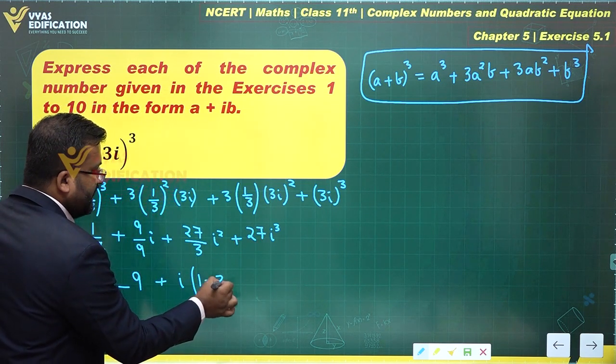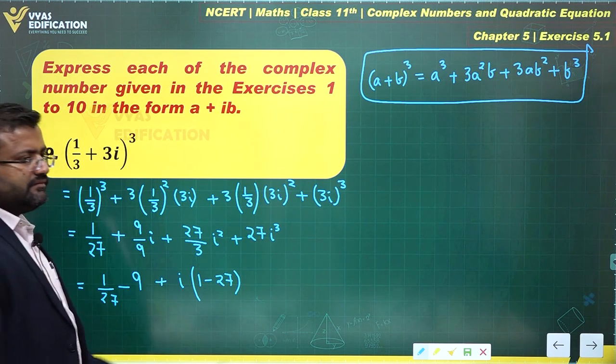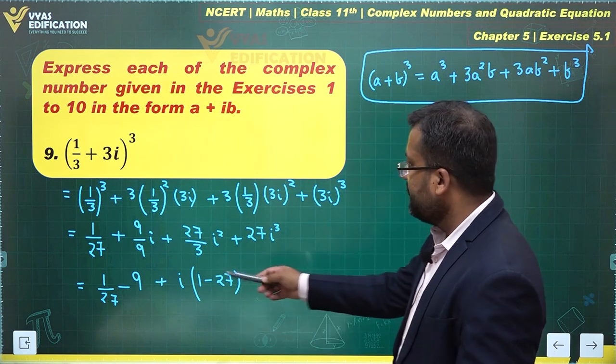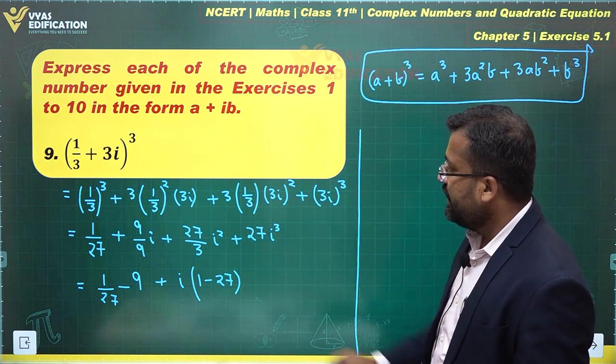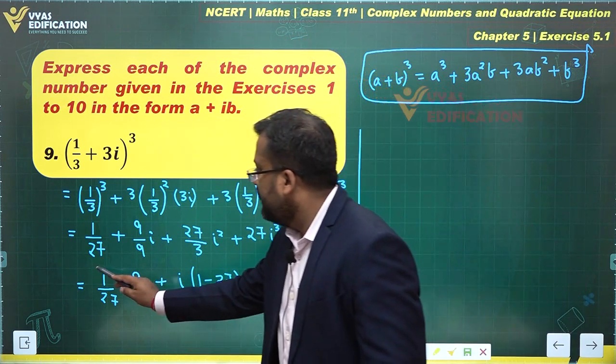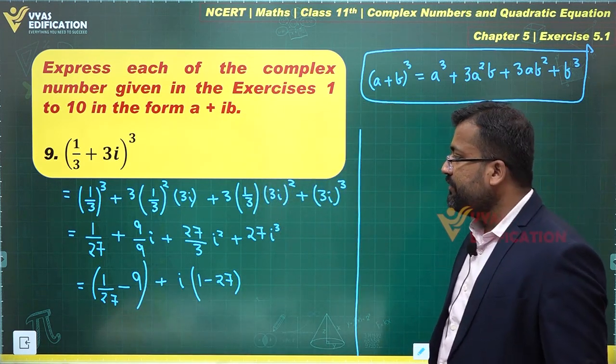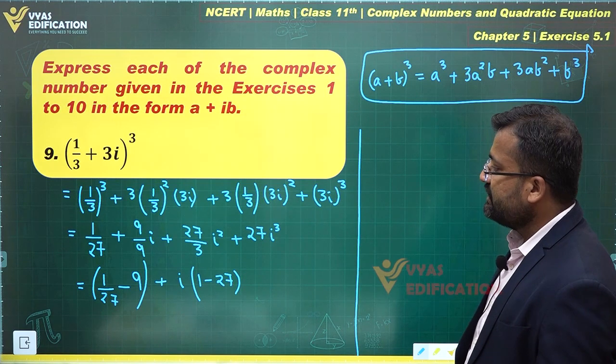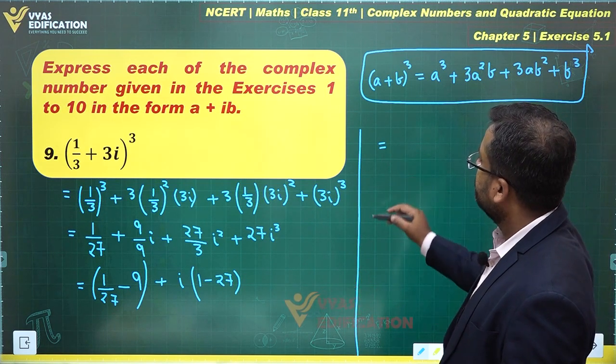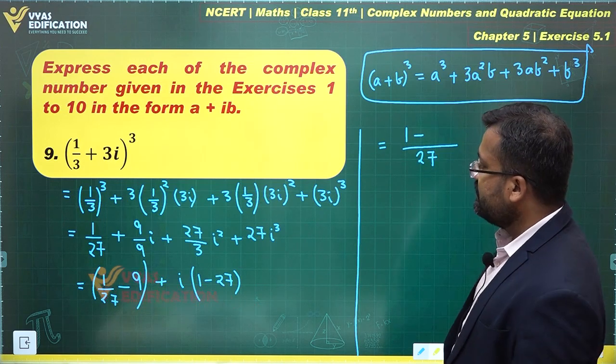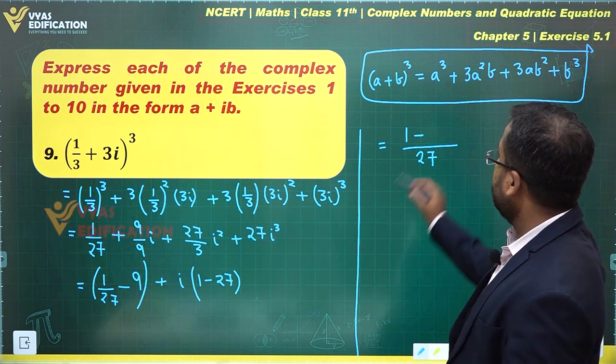Can we simplify it further? Yes, the real part has to be simplified first. We'll have to take the LCM. Let's take the LCM of this real part: 1/27 - 9. In the denominator you'll have 27. This is 1 - 9 × 27.